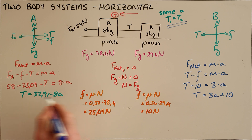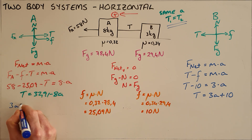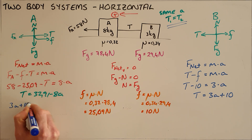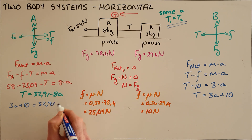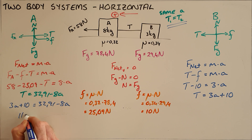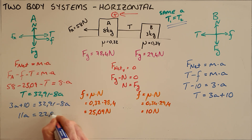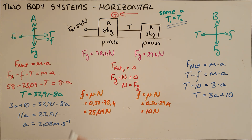Since we have two expressions for tension and we know tension is constant because it is the same rope, the two tensions must be equal. So 3A plus 10 equals 32.91 minus 8A, which we can simplify to solve for acceleration. We find that acceleration is a positive value, meaning to the left, of 2.01 meters per second squared.